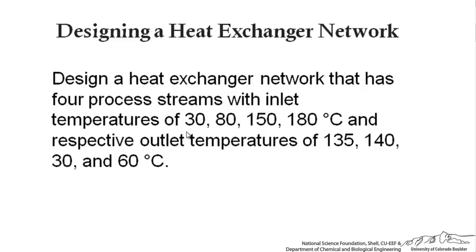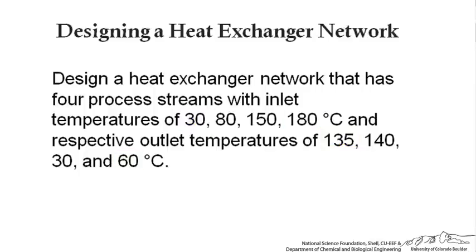In this video we are going to focus on a specific design approach for creating a heat exchanger network, working through an example problem with four streams going through a process. They have certain inlet and outlet temperatures — one cold stream enters at 30 degrees and exits at 135, and a hot stream enters at 180 and exits at 60. Looking at these temperatures, we have two hot streams and two cold streams.